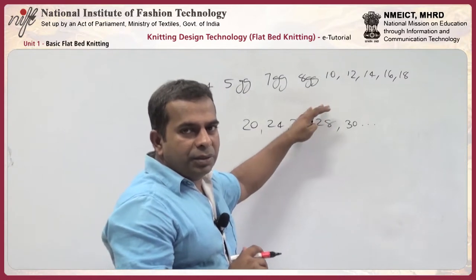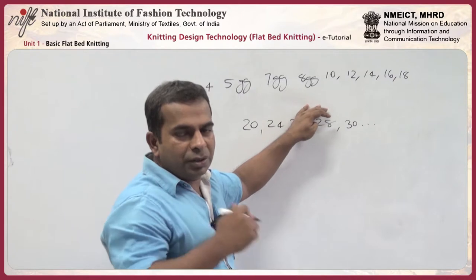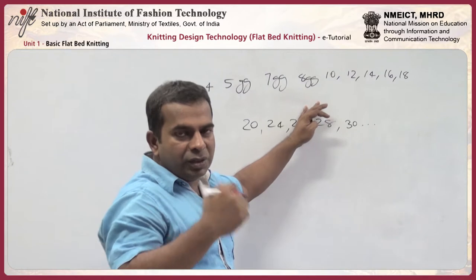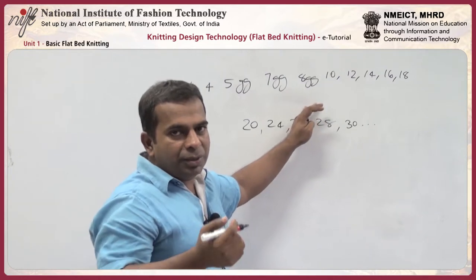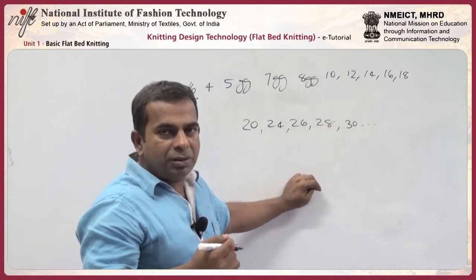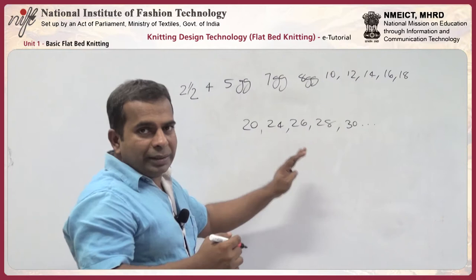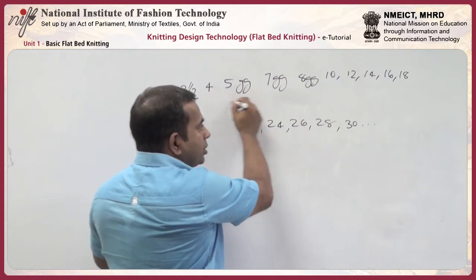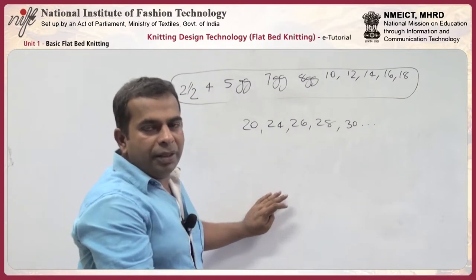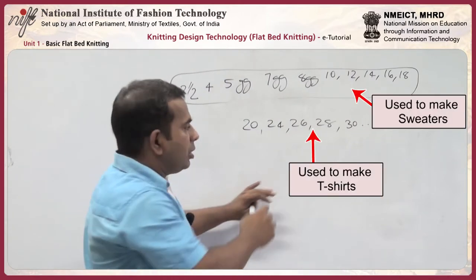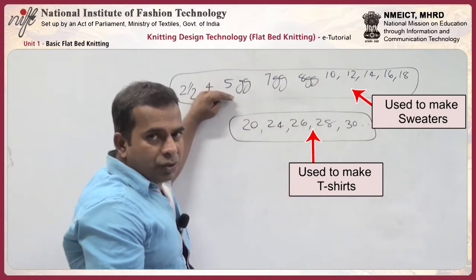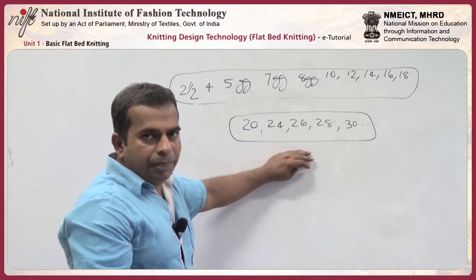In the industry, we have the flat knitting industry and the circular knitting industry. Sweaters will have bigger loop sizes — usually sweaters are produced with lower gauge flat knitting machines. T-shirts are produced with higher gauge circular knitting machines. So from flat bed knitting machines you get sweaters, and from circular machines you get t-shirts.